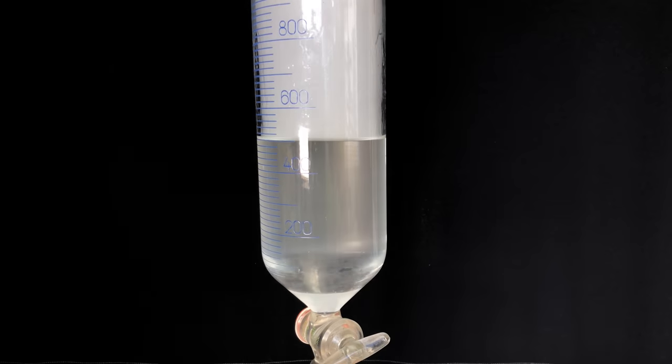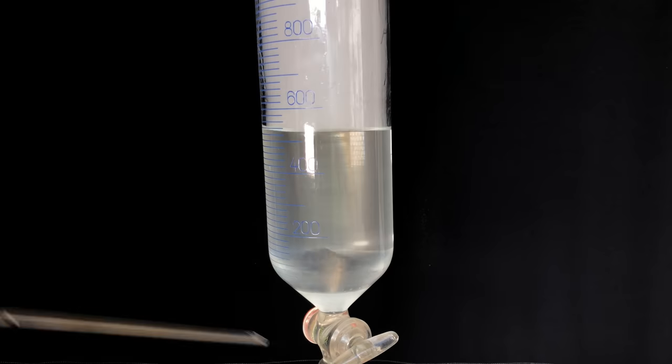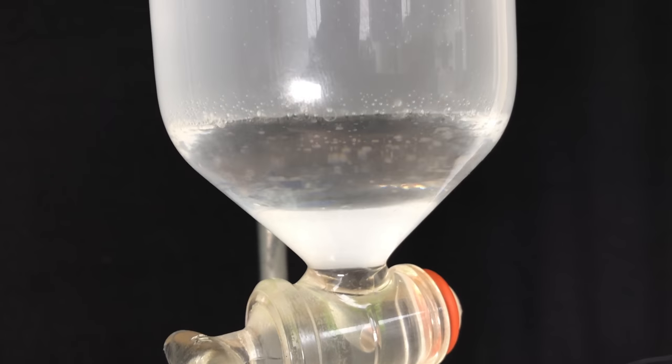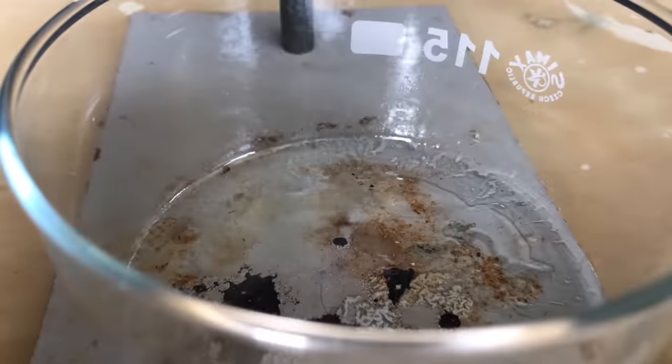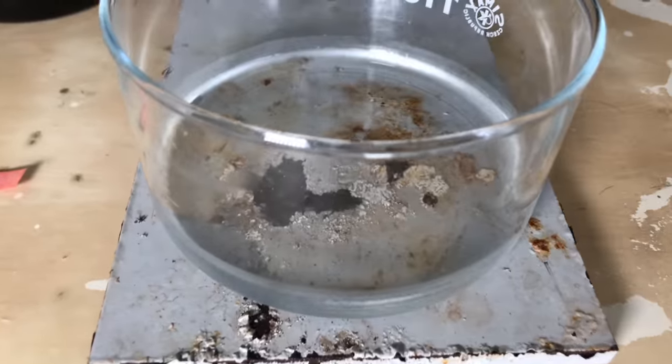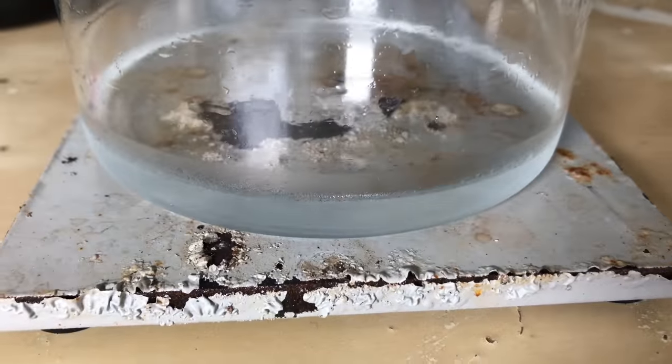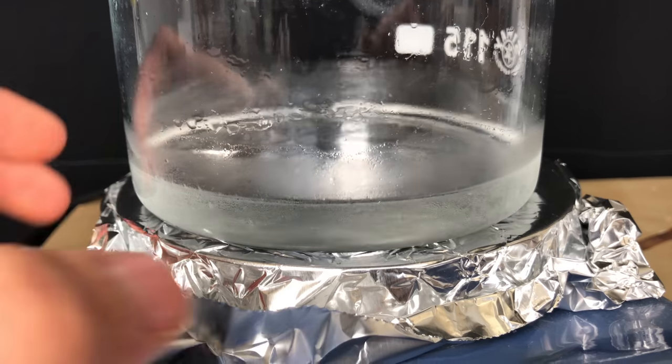The funnel was gently shaken violently, and once the layers settled, the bottom DCM layer was drained into an evaporating dish. Two more washings with about 50 ml of DCM each were performed and the layers were combined in the dish.